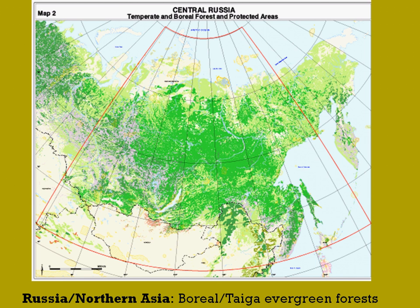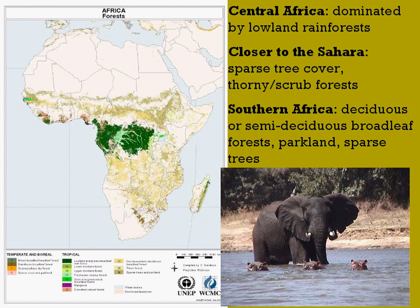In Africa, especially in Central Africa, the forests are dominated by lowland tropical species. In Northern Africa, as you can see on the map, there's nothing there because that's the Sahara. As you get closer to the Sahara, you end up with a lot more sparse tree cover and thornier, scrub-type forests.